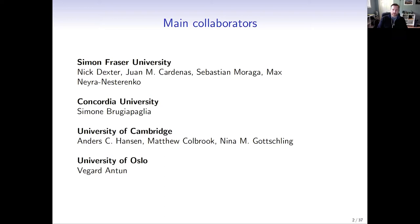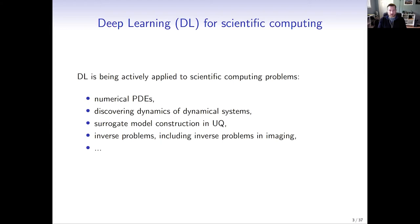Deep learning is being actively applied to many different scientific computing problems in the last three to five years. We've already seen talks this morning about solving PDEs using deep learning, and we will see talks about discovering dynamics of dynamical systems — Nathan Kutz will be giving a plenary talk about that. There are also applications in surrogate model construction, uncertainty quantification, and inverse problems including inverse problems in imaging, which is one of the topics I'll talk about. This is now a very active area of inquiry.